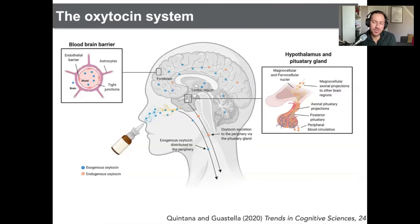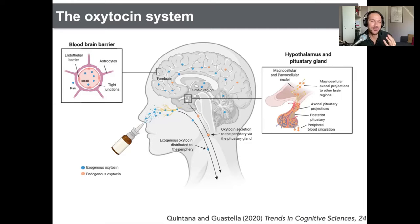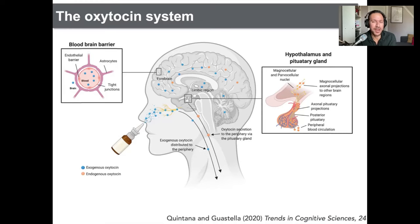For most of my research career, I have been focusing on the neuropeptide oxytocin. This is a peptide produced in the hypothalamus. If you were to curl your tongue back inside your mouth and touch the roof of your mouth as far back as you could go, you would almost be touching your hypothalamus. Oxytocin is produced there and distributed both within the brain and also across the periphery — across your entire body.